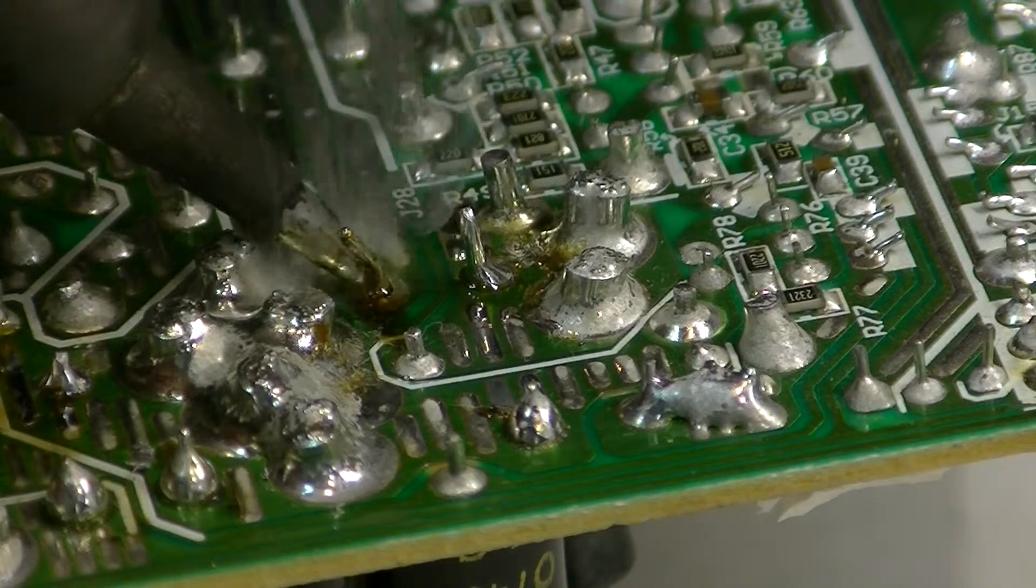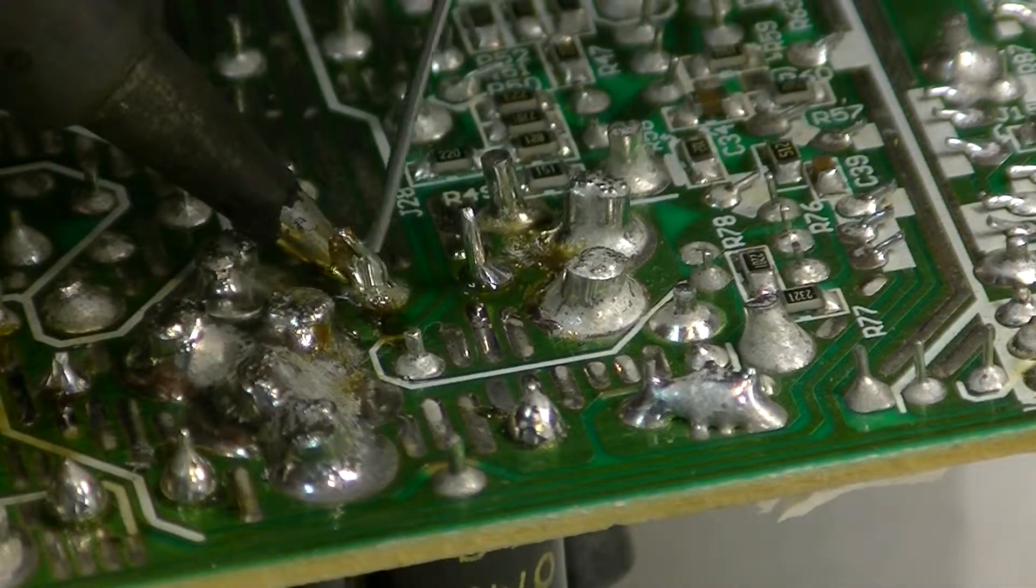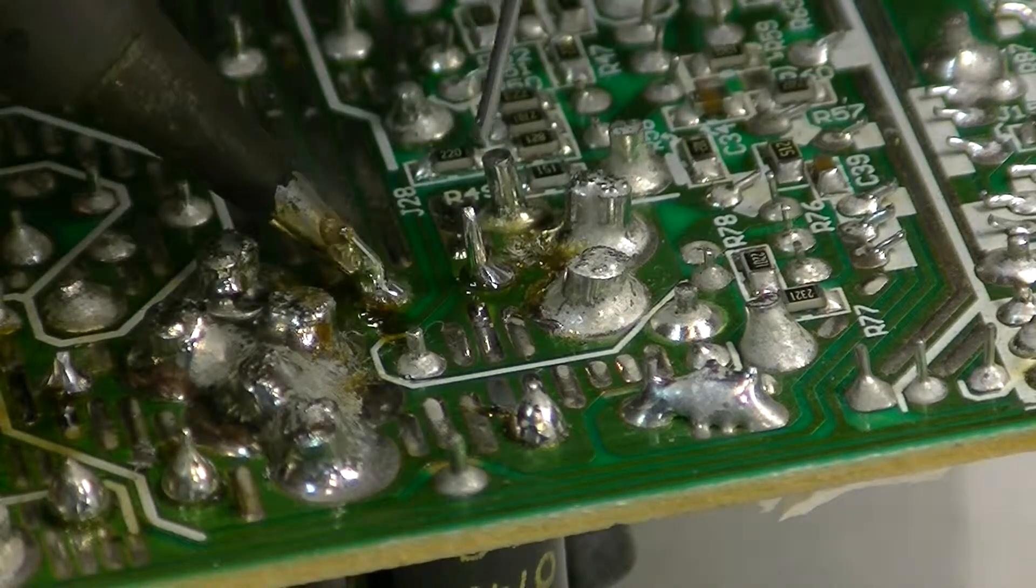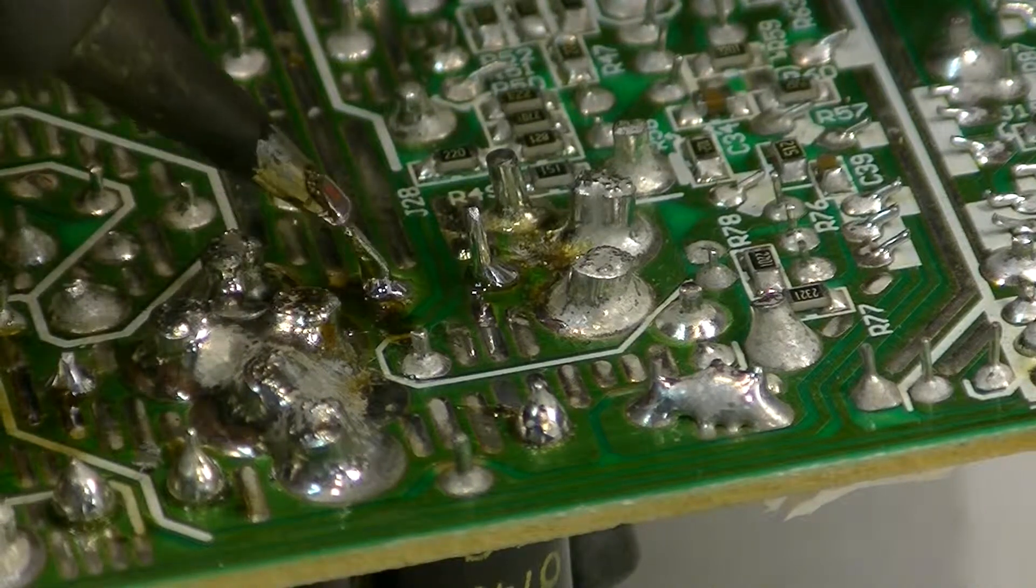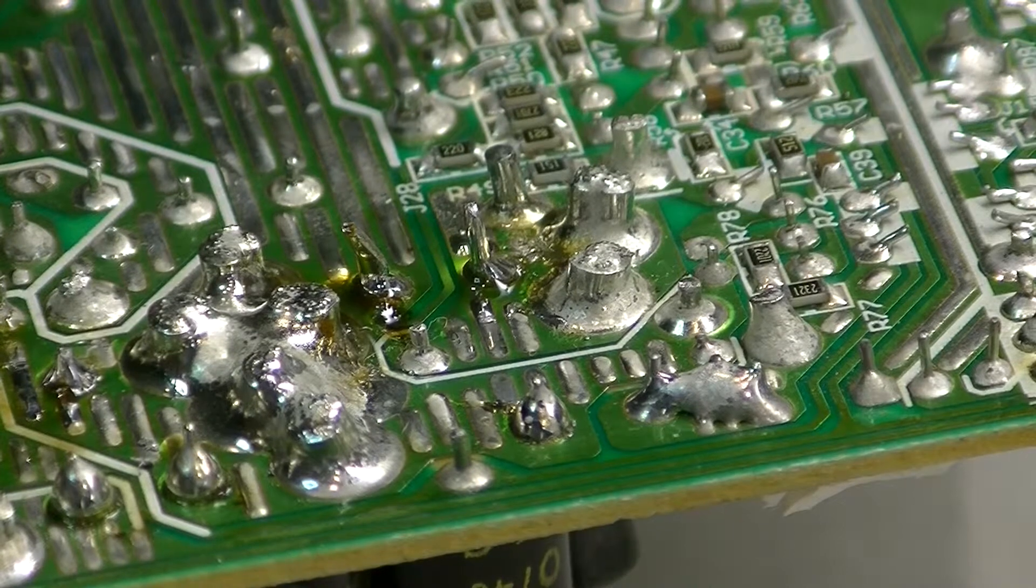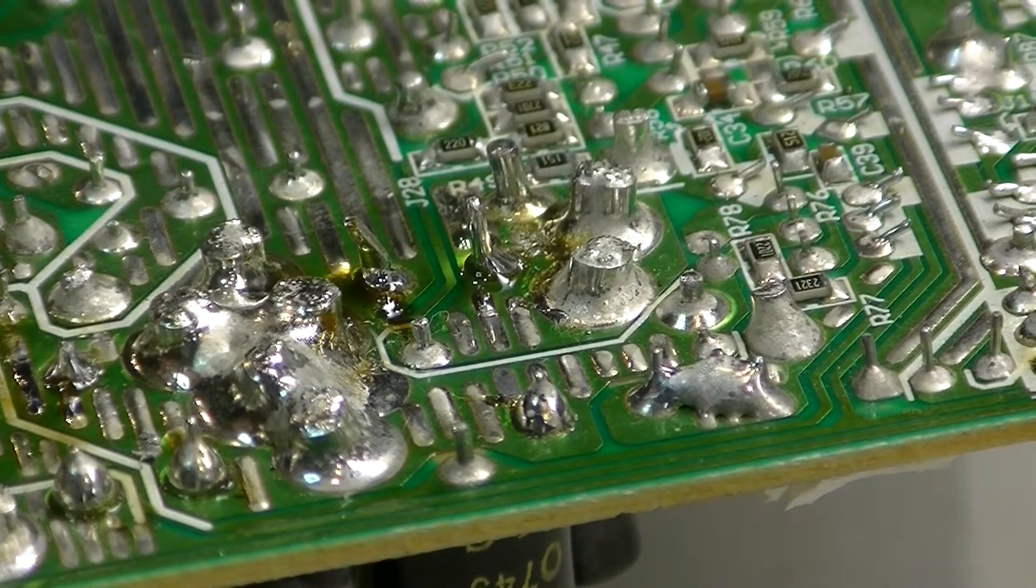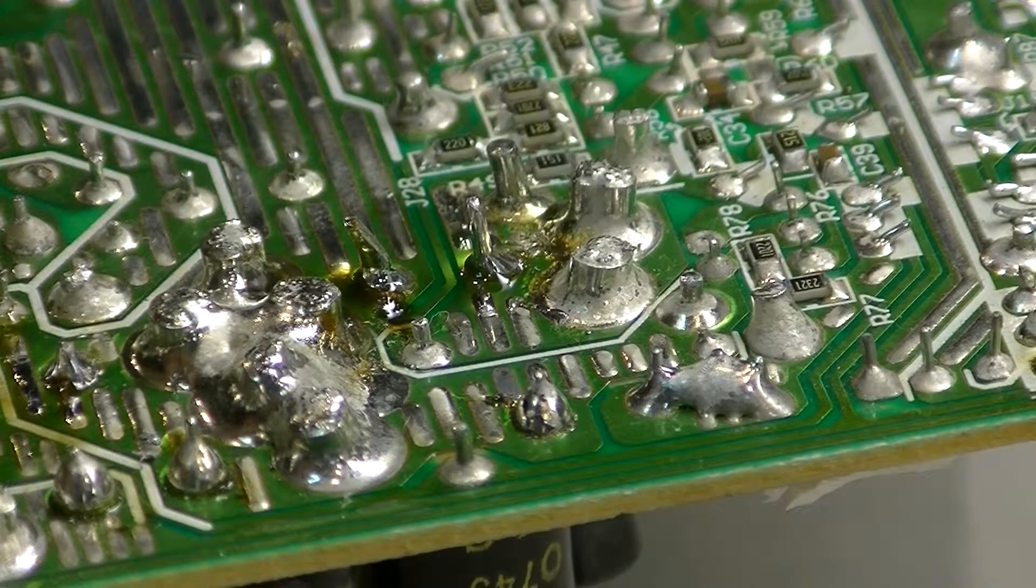Same thing - we're just going to apply the solder. You can see it almost melts directly on impact, which is good. Again, teardrop shape, just move up. Got to clean off the iron because we need to have a clean iron.